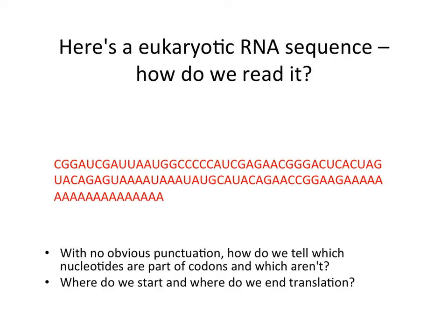Here's a eukaryotic messenger RNA sequence. What's the first step of translation? How do we read this? How do we turn this into a protein? How does a cell know where to start? We start with a start codon. So we have to find a start codon. How do we find the start codon?